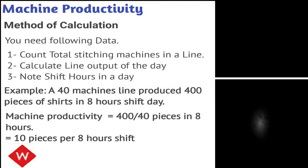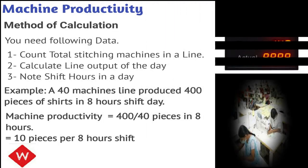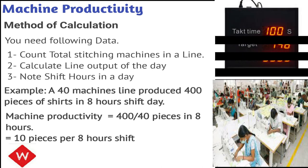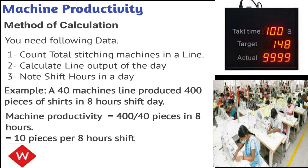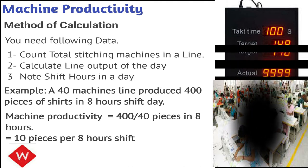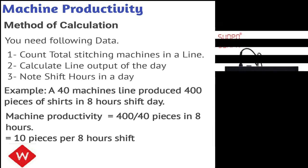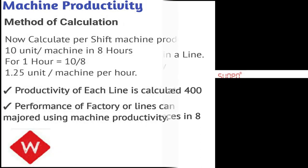For the calculation method, you need the following data: how many machines are available in one line, your line output in one day, and how many hours you are operating per day. In the first example, there are 40 machines available in one line and 400 pieces produced in one shift. Using the machine productivity formula — output divided by number of machines — 400 garments divided by 40 machines gives 10 pieces per shift.